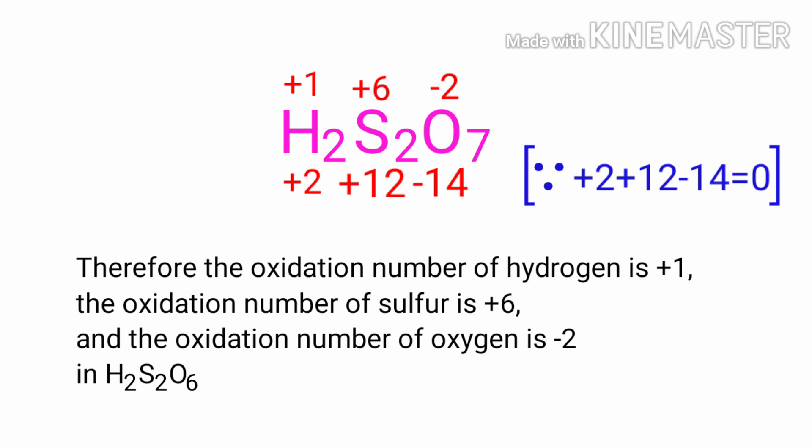Therefore, the oxidation number of hydrogen is plus one, the oxidation number of sulfur is plus six, and the oxidation number of oxygen is minus two in disulfuric acid.